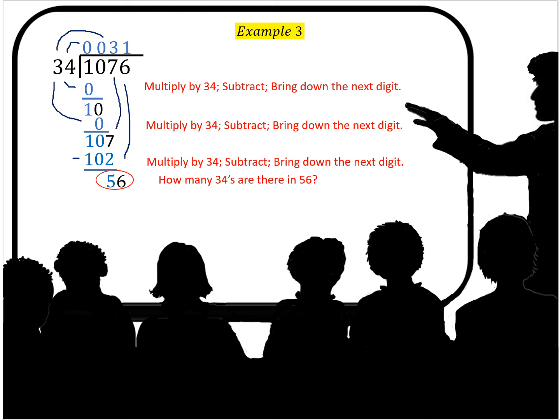How many 34s go into 56? 1. 1 times 34 is 34. Then subtract. You have 22.